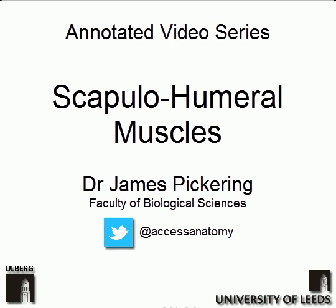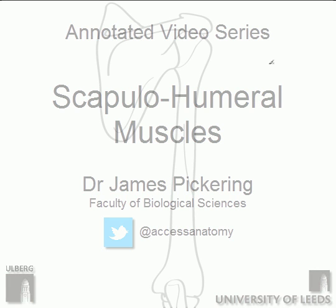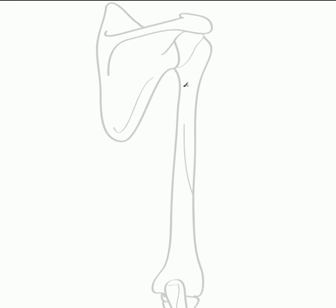Welcome to this annotated anatomy video that's going to outline the scapulohumeral muscles. These are the muscles that run from the scapula to the humerus. On the screen at the moment we have a diagram showing the posterior surface of both the scapula and the humerus.